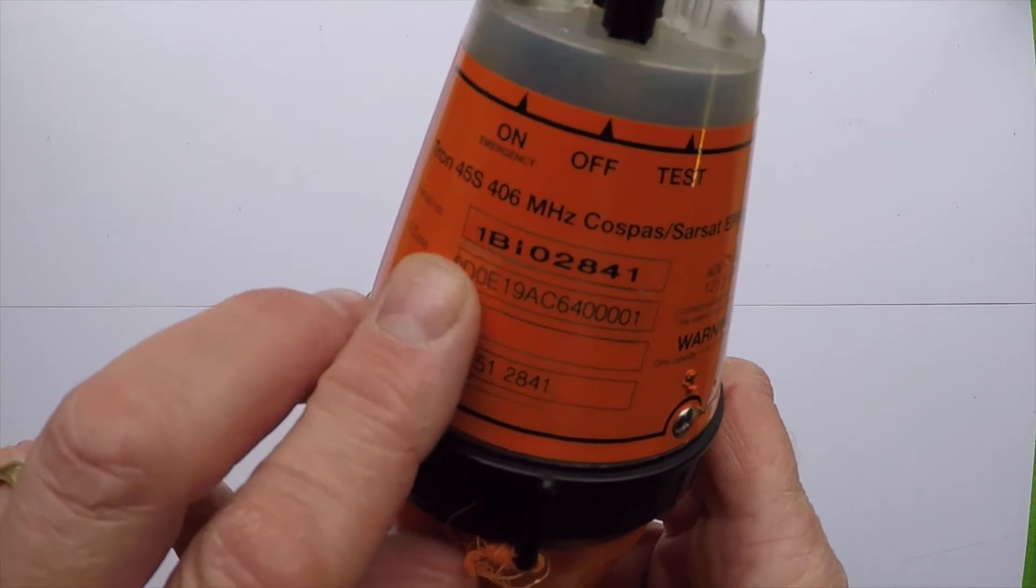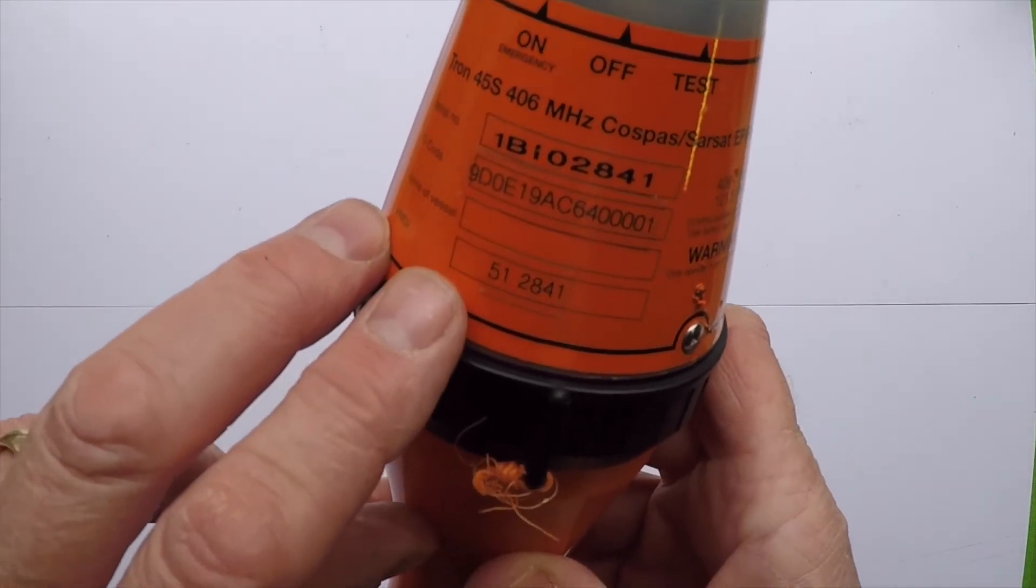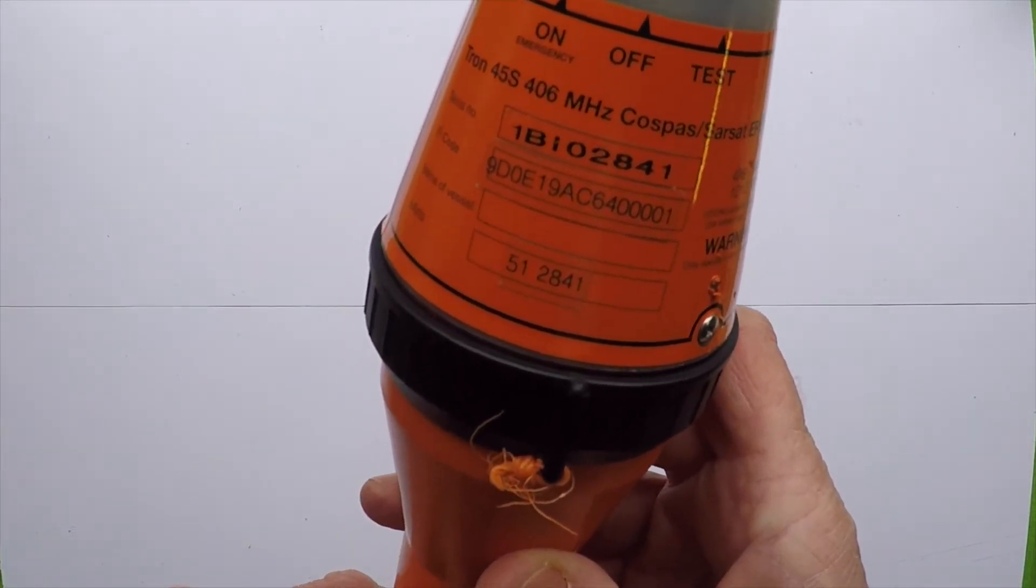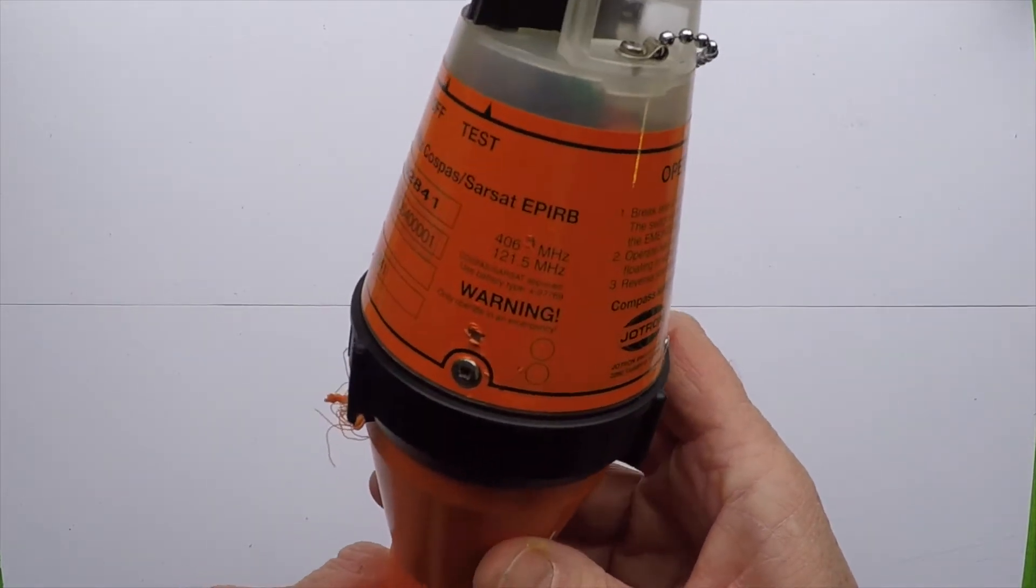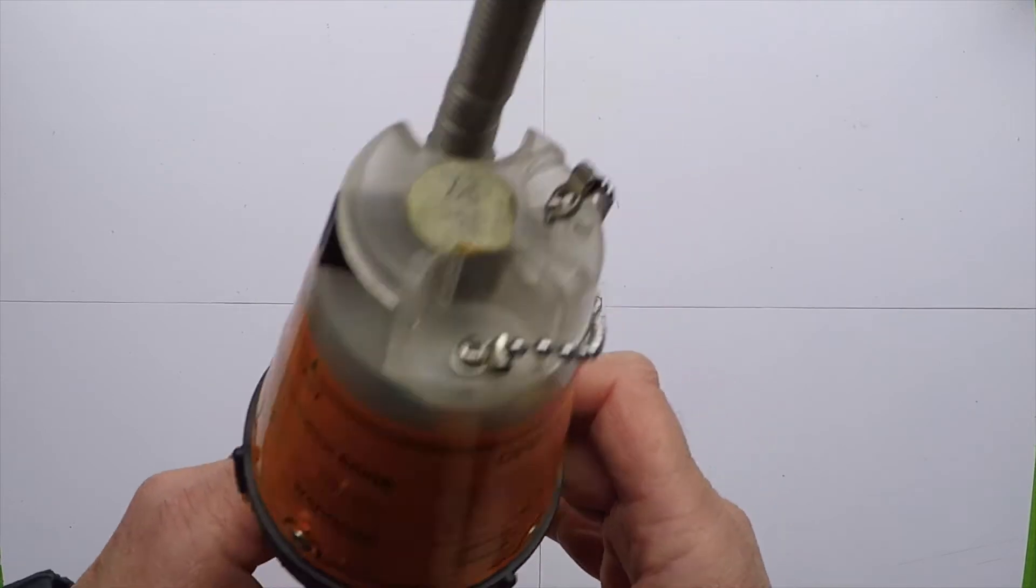If it is set off in an emergency, the details that we registered are available to the rescue services. What we can do to set it off is all we do is pull the pin.